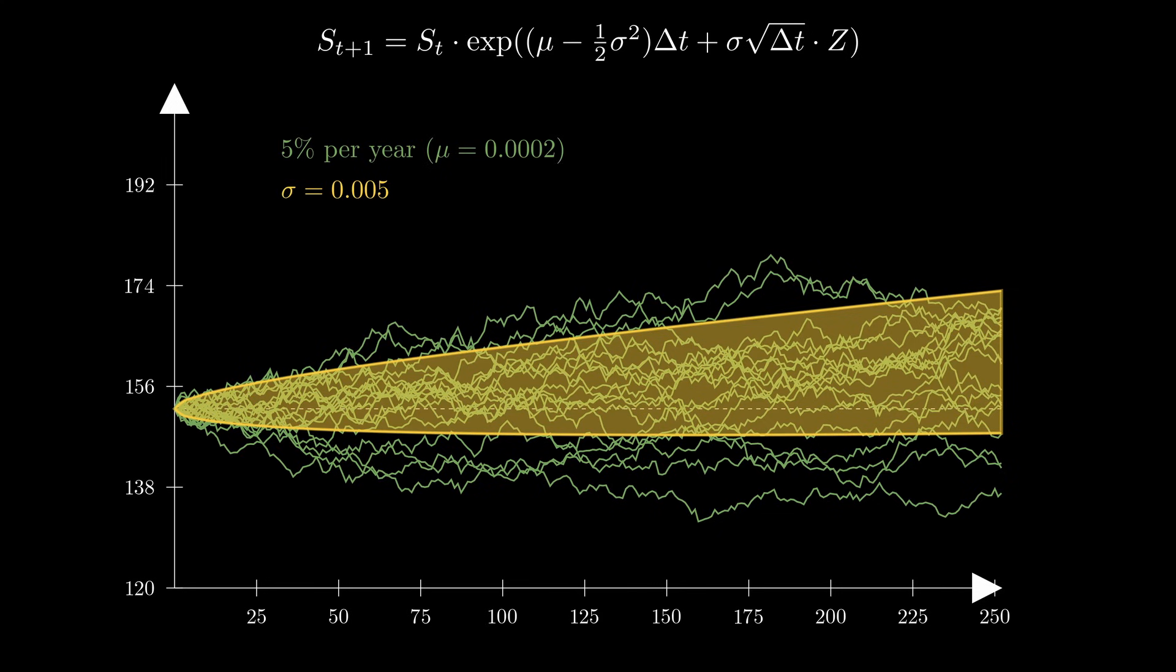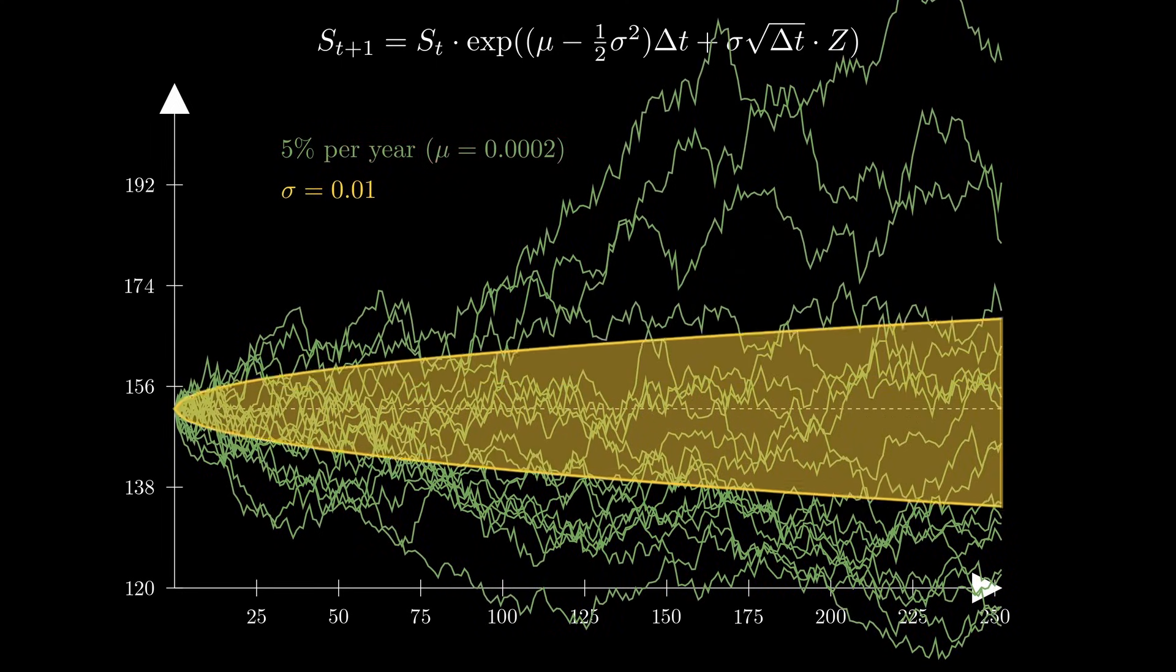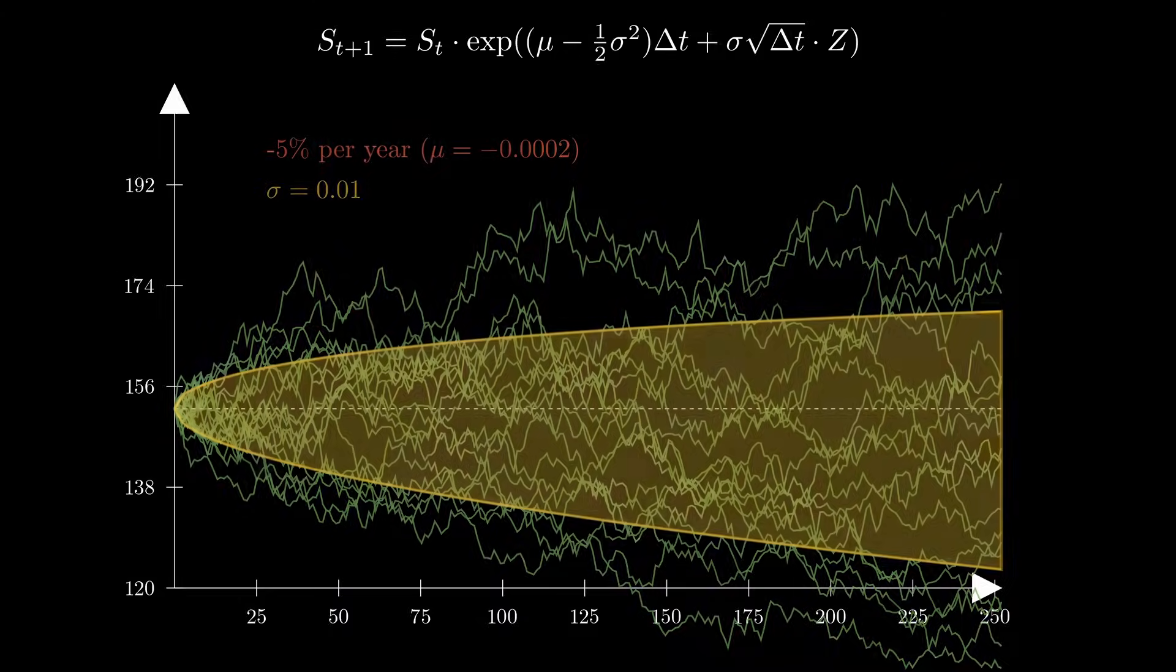If we continue to modify these parameters, we can see that by increasing mu, we increase the expected return of the asset, and by decreasing sigma, we decrease the risk associated with holding the asset.